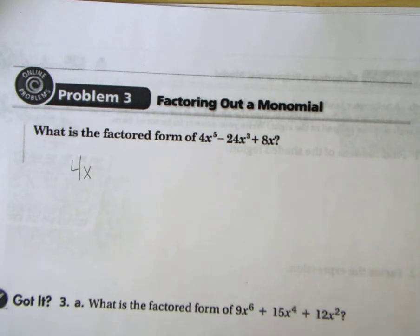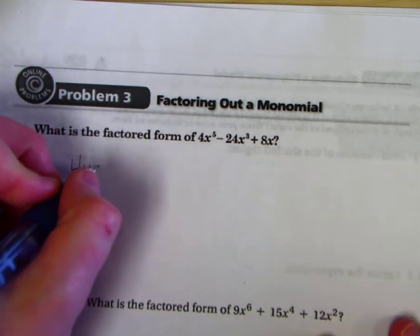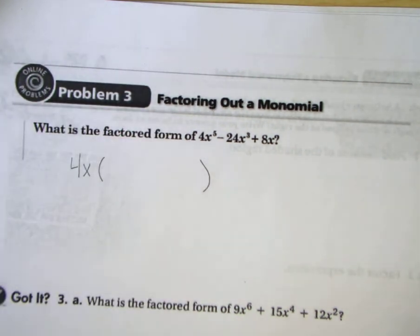Now this says what is the factored form. What that means is pull it out, but still rewrite it so that if you distribute it back in, you'd get the same thing. Alright, if you need a visual, here's what we're going to do.